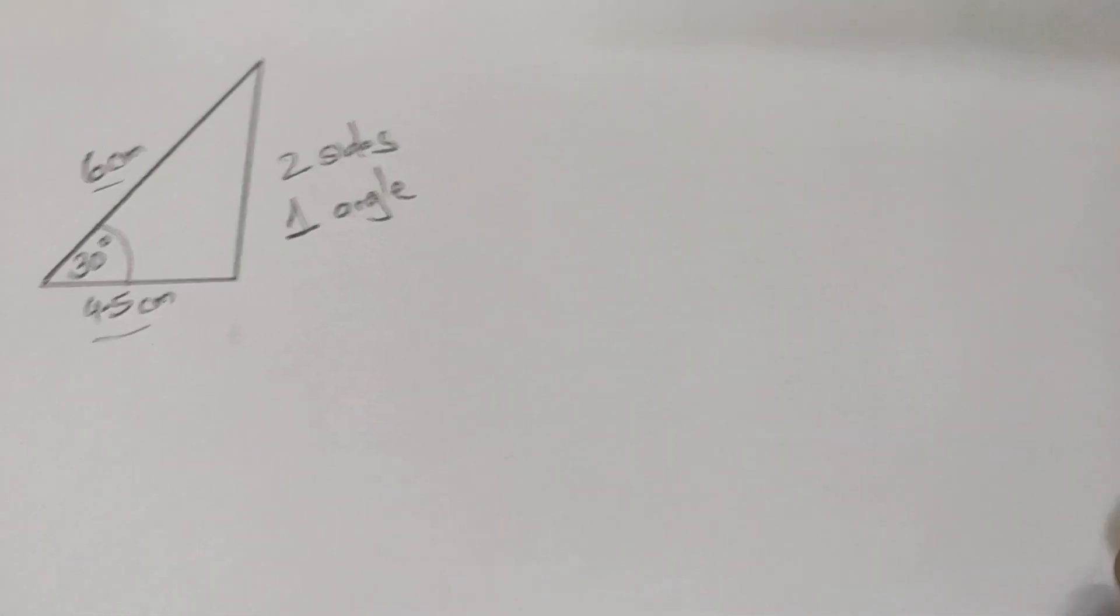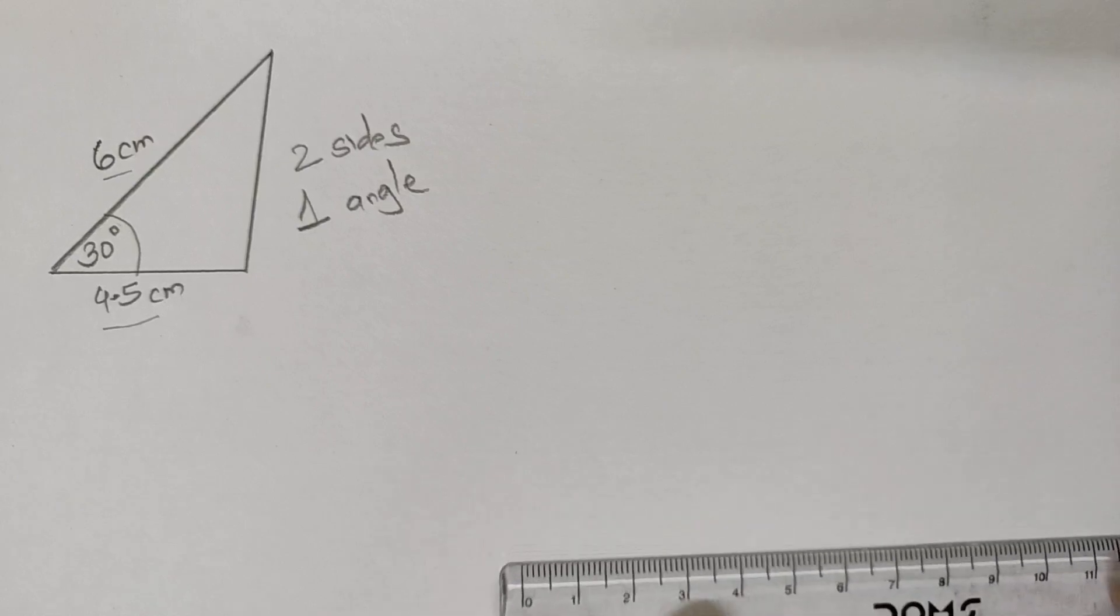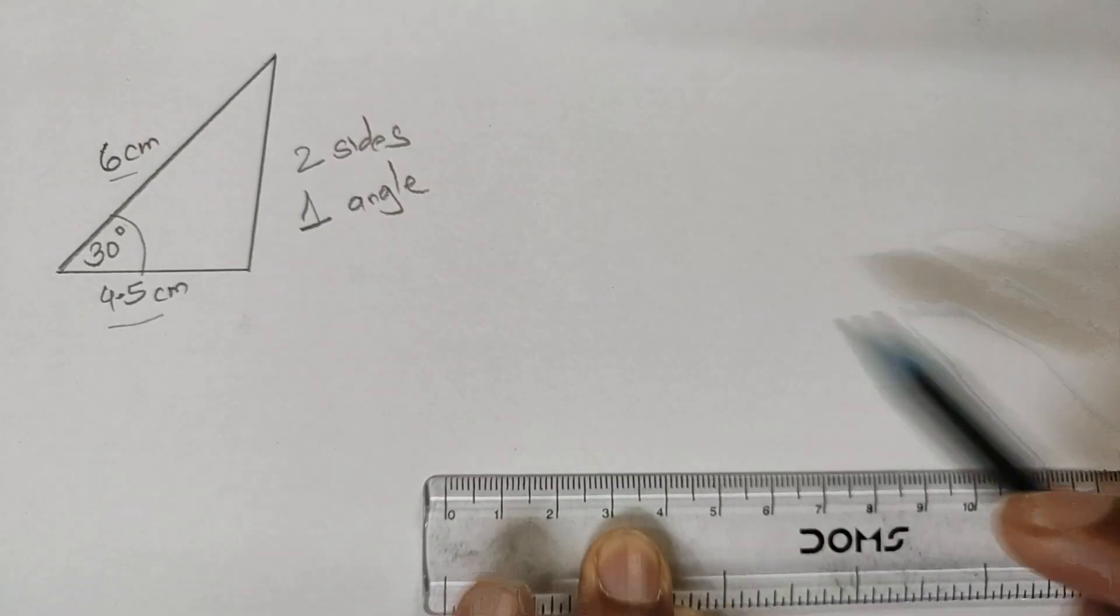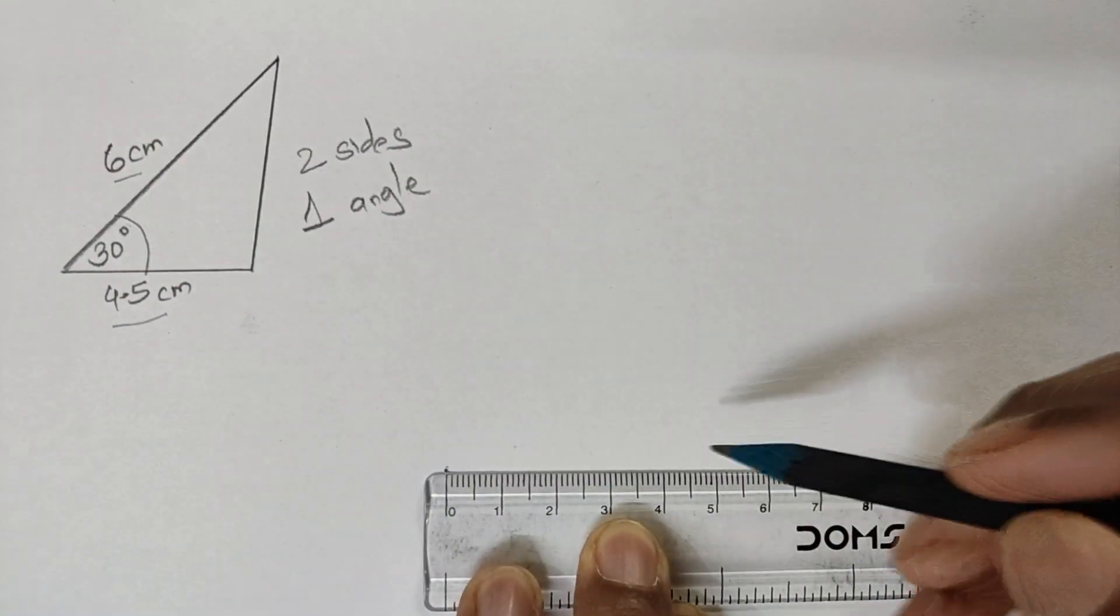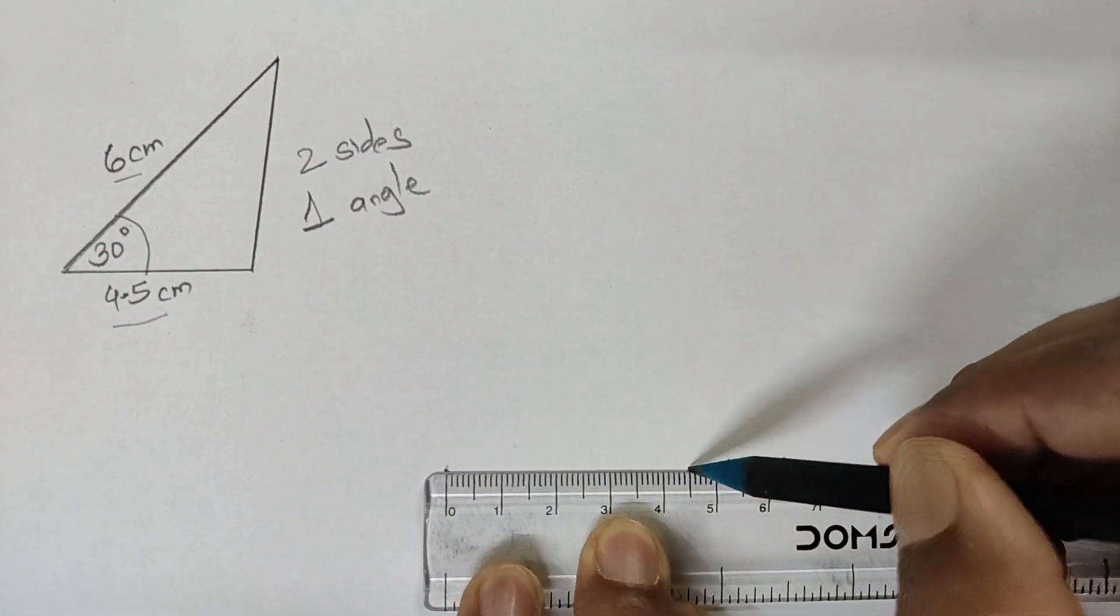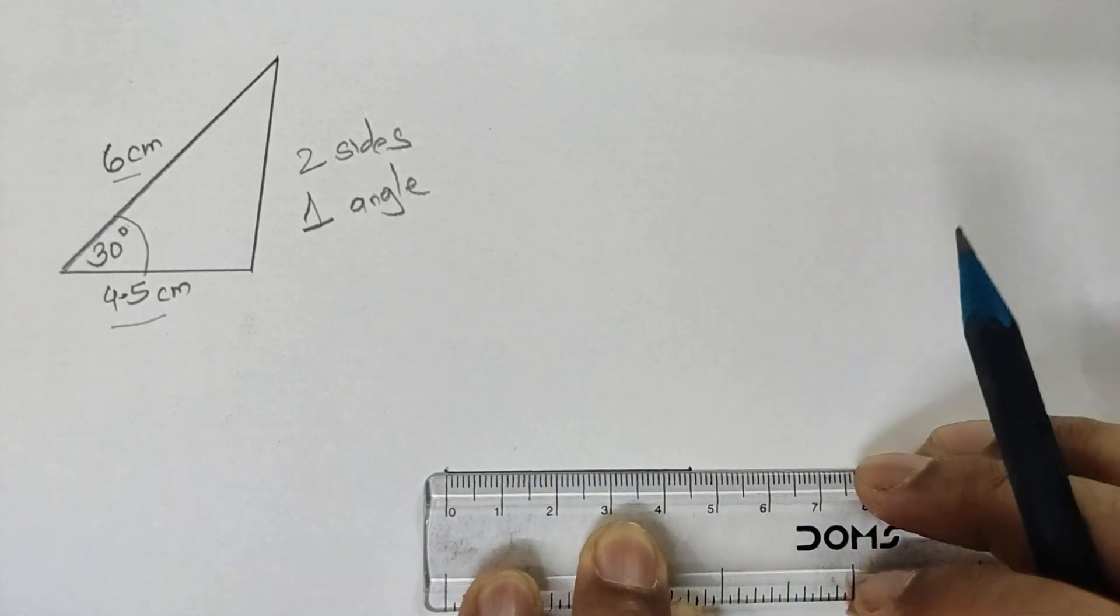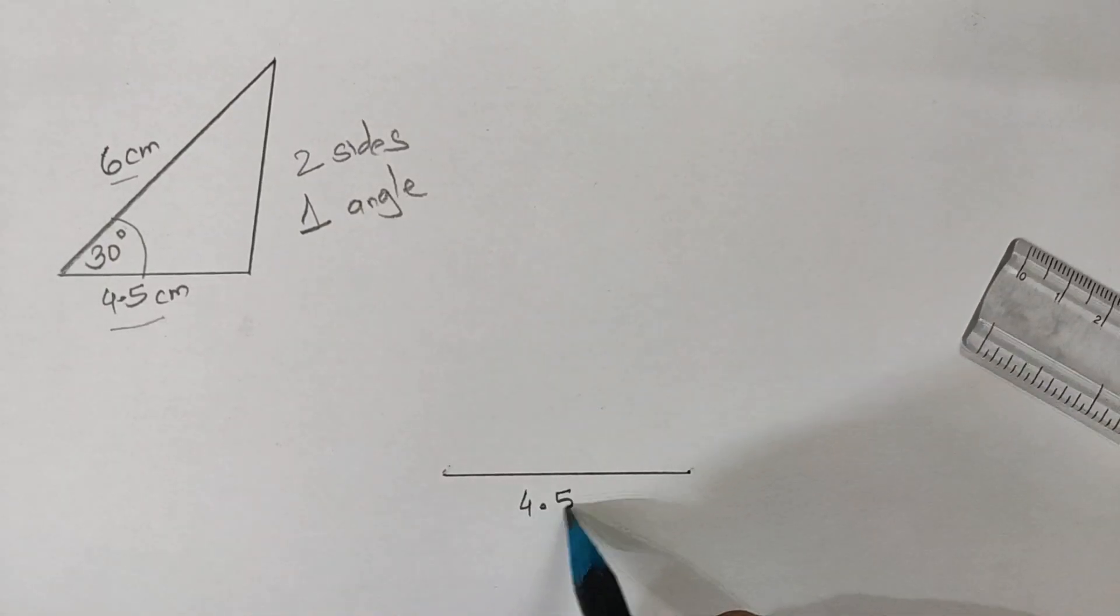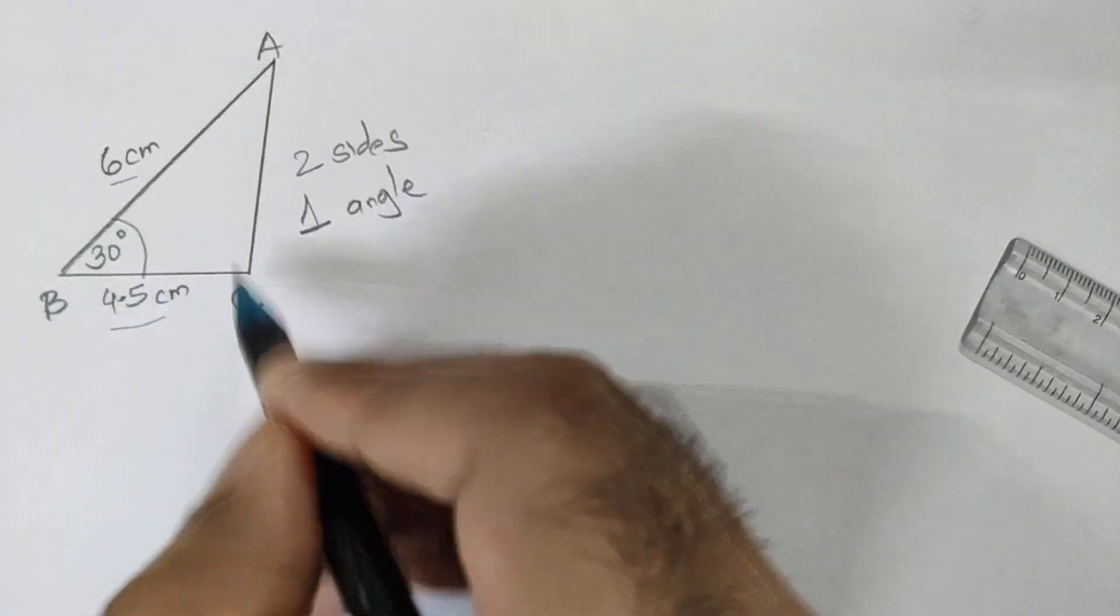So first step is we'll draw the base. The base is 4.5 centimeters. Place the ruler properly, mark a point at zero, mark a point at 4.5, and join it. So first step: drawing the segment, label it 4.5 centimeters. You can name the triangle as ABC. The triangle name is triangle ABC, so we have got the base BC.